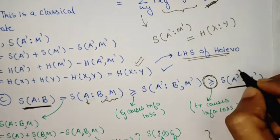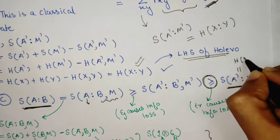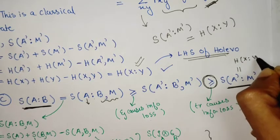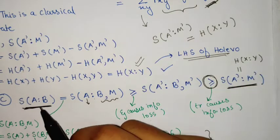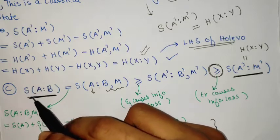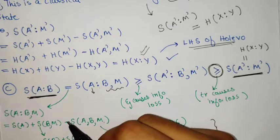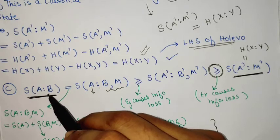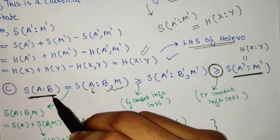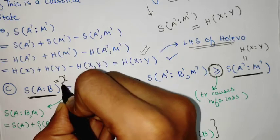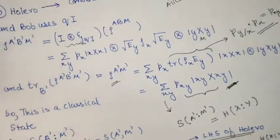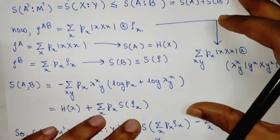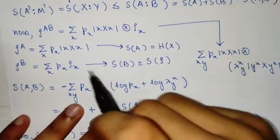This mutual information between A and M we have shown equals the mutual information between x and y. So all that remains is to show that the mutual information between A and B is exactly equal to the right side of the Holevo bound, meaning it must equal the chi quantity.